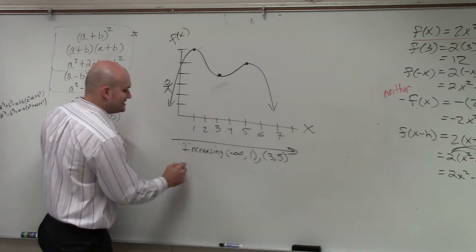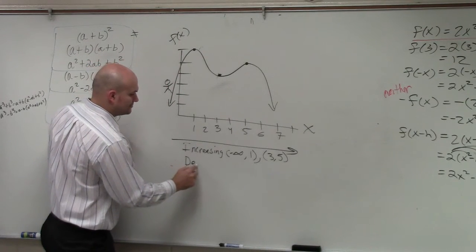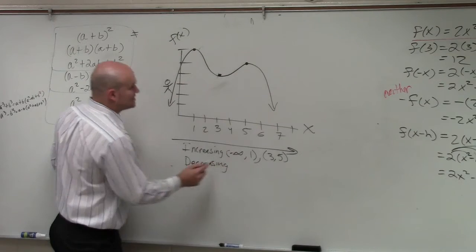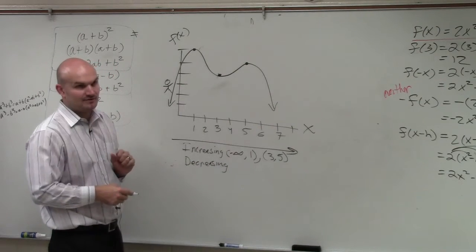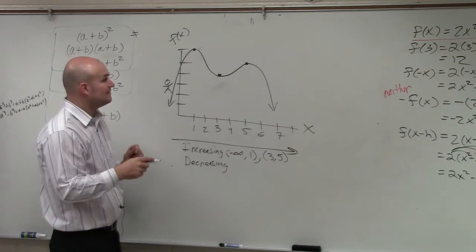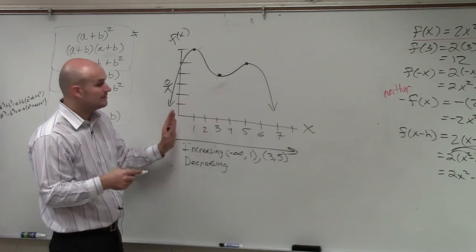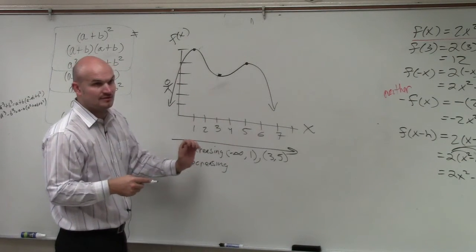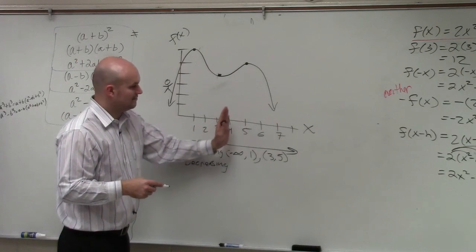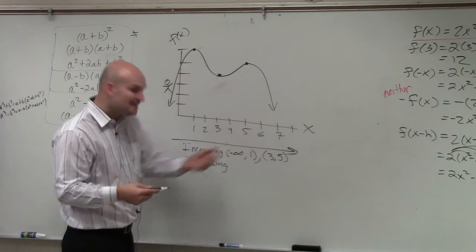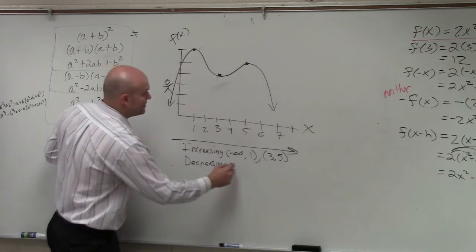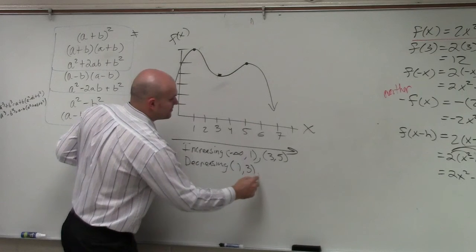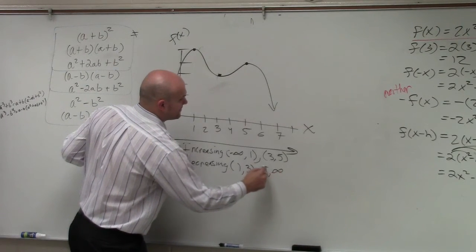Now let's look at decreasing. When is the graph going down? What intervals is the graph going down? 1 to 3. And where else? And then that's like 5 to infinity. Very good. So decreasing on 1 to 3 and then 5 to infinity.